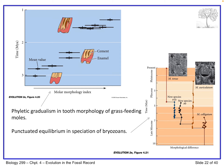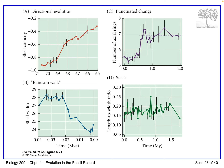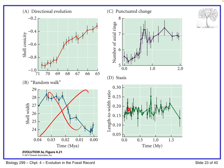The point is evolution can play out in a number of different ways, and we shouldn't shoehorn ourselves into thinking about it in terms of just one pattern. We also see directional evolution - a good example of anagenesis - where a character like shell conicity gradually changes over five or six million years. There's also punctuated change: a short period of stasis, a rapid punctuation event, then evolution to a new level of stasis. And there's stasis itself, where some feature like length-width ratio doesn't really change on average over a long period of time.